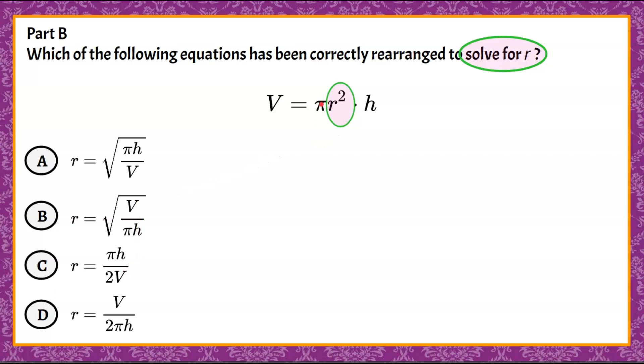So we can see that we have π multiplied by r² multiplied by h. The inverse of multiply is to divide. So I'm going to divide both sides by π and h. So when I do that, π divided by π and h divided by h is 1, leaving us r². So we have volume divided by π times h is equal to r².